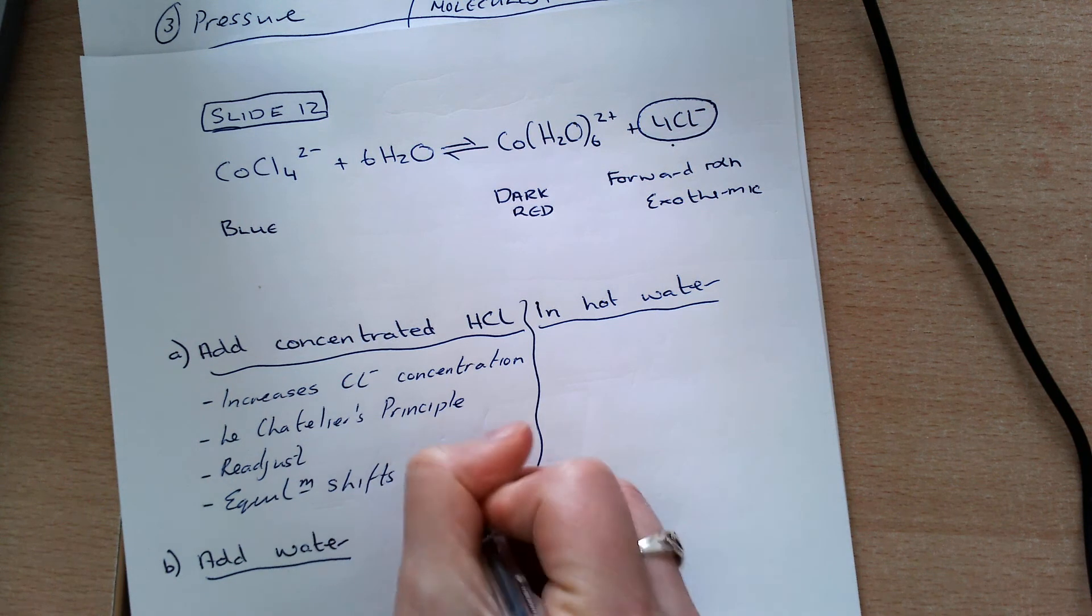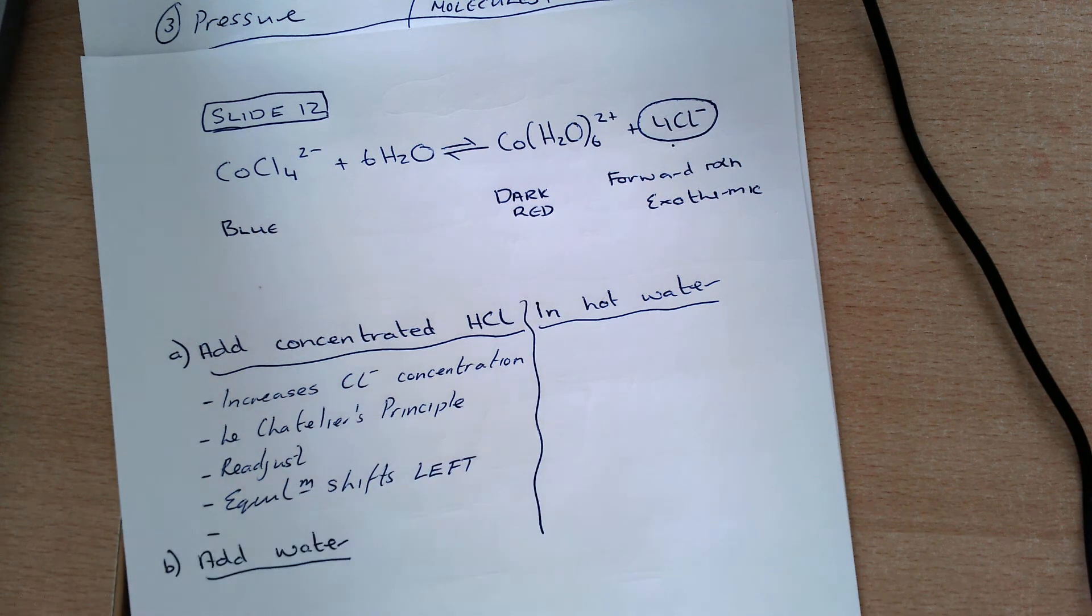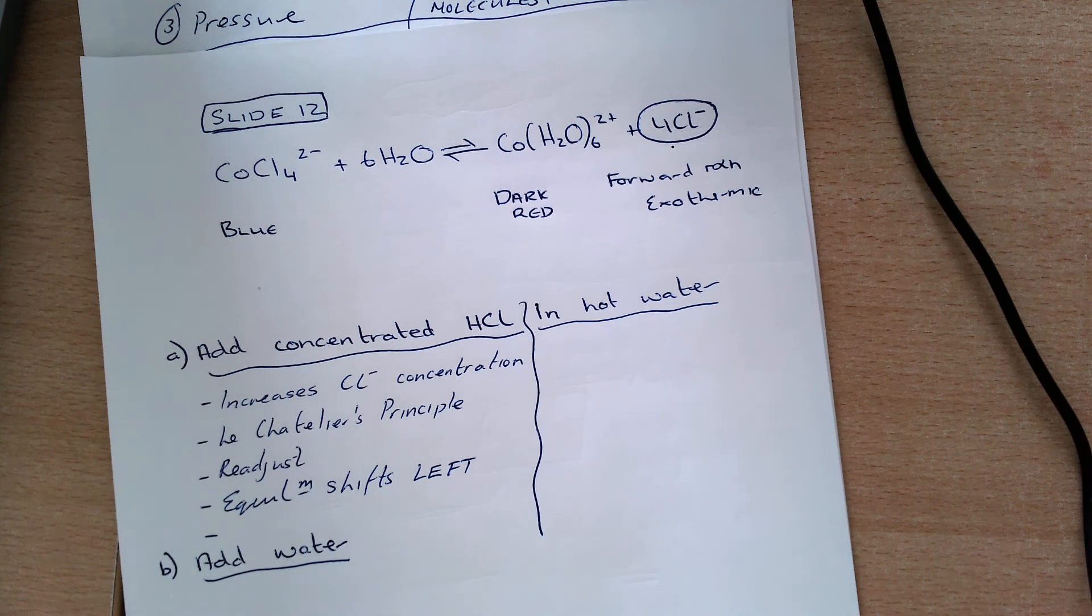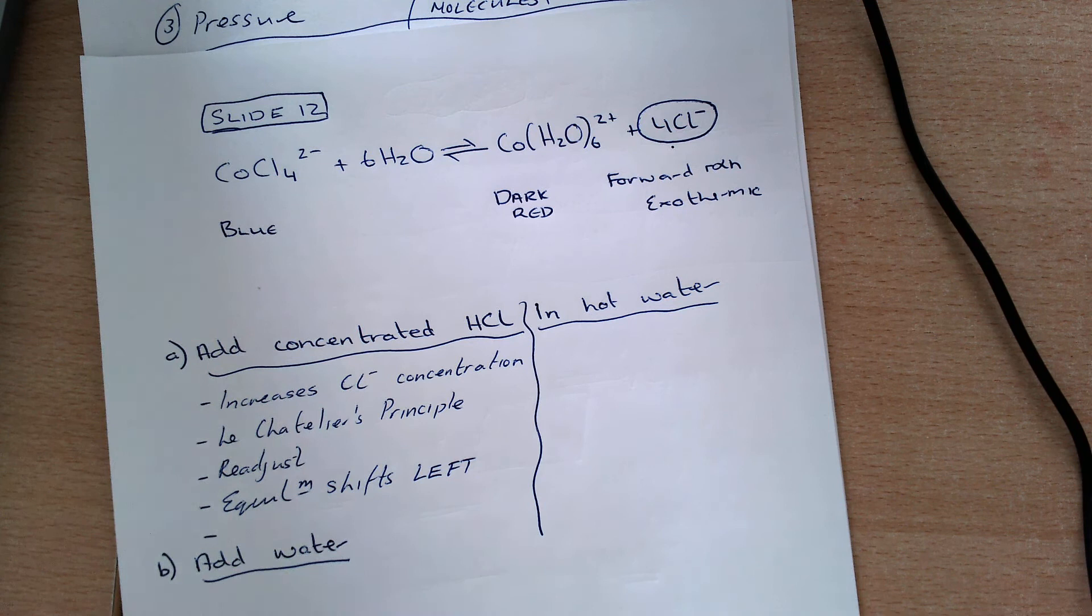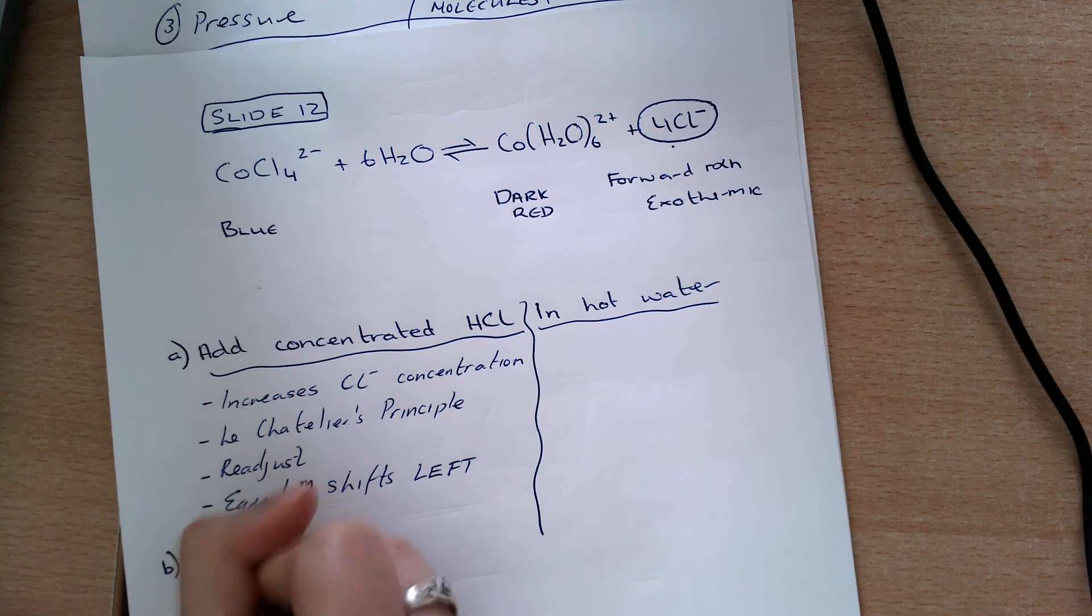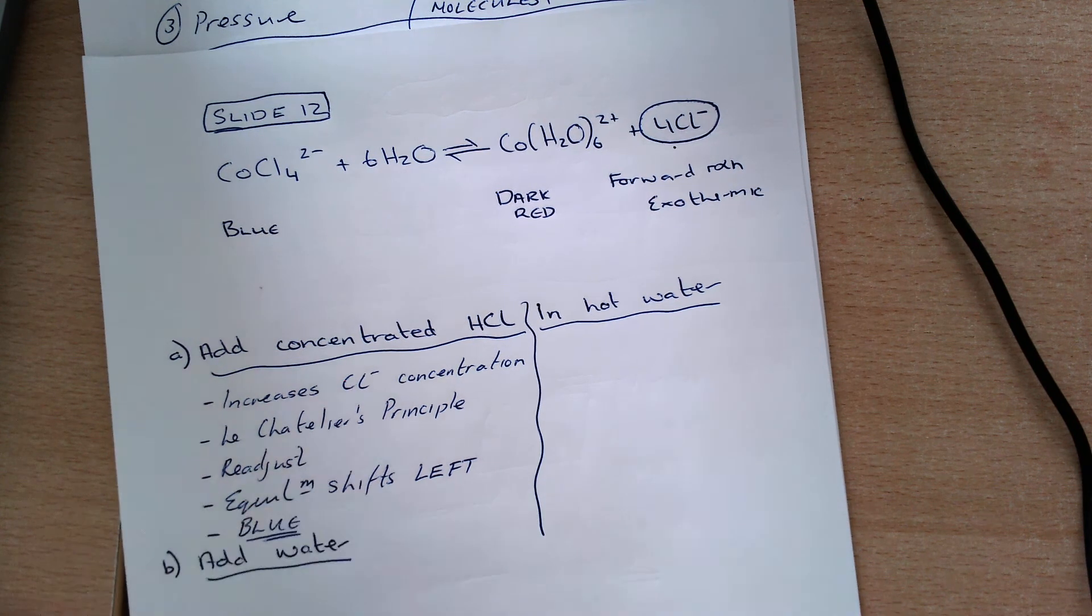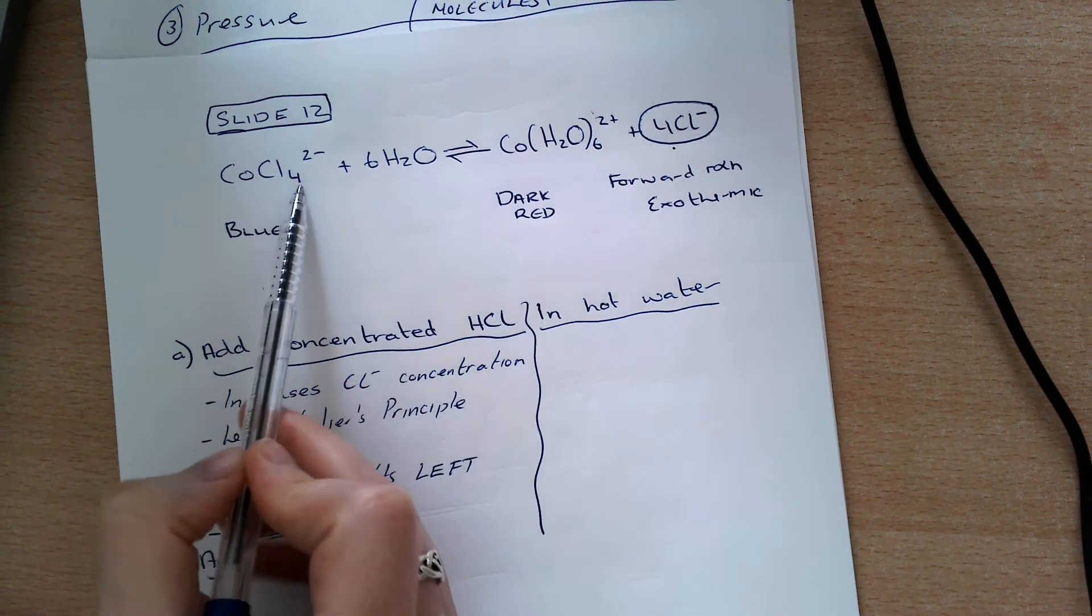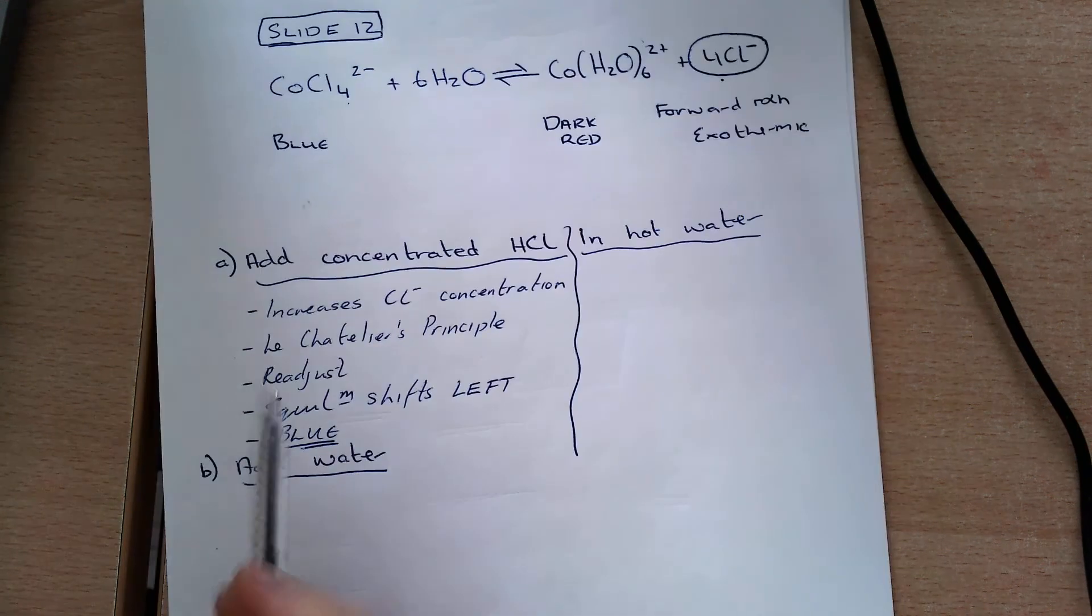And it's important here, since I'm given the colors, you might be asked, does this increase or decrease the amount of reactant or product? Or you might be asked to give the color. So make sure you do that, because otherwise you will lose marks. So what we see then, because the equilibrium is shifting to the left, I have a blue color.